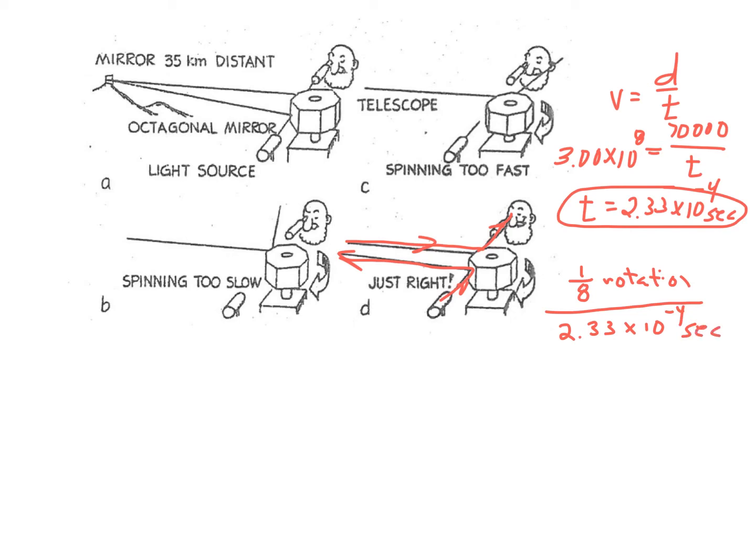So if I simply do the math there, one-eighth is 0.125 divided by the 2.33 seconds, that gives me 536 rotations per second.